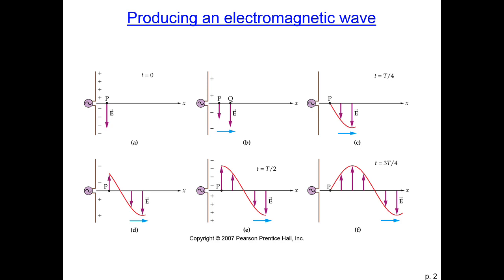It keeps going, and now the voltage has flipped, and instead of pointing down, now the negative charges are on the top of the antenna, so the electric field is now pointing up. And as the voltage keeps oscillating, the electric field keeps changing.